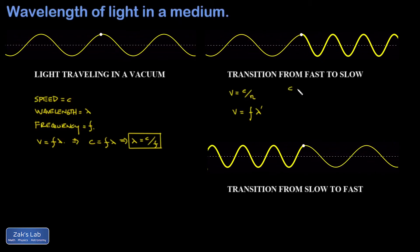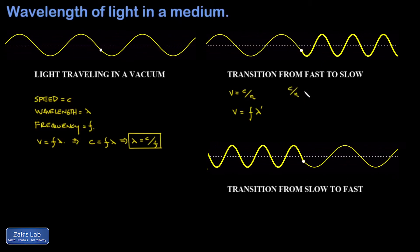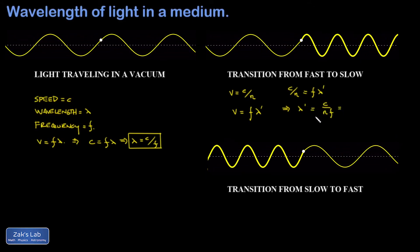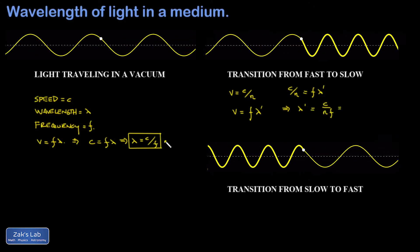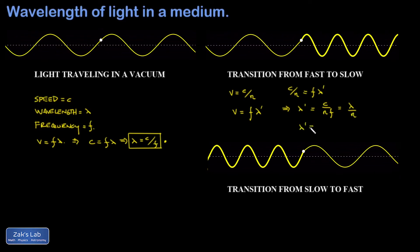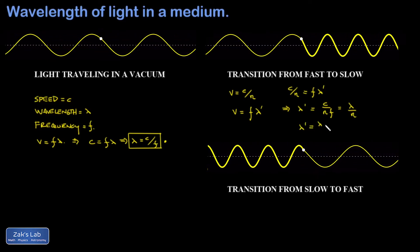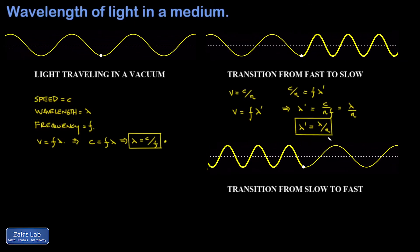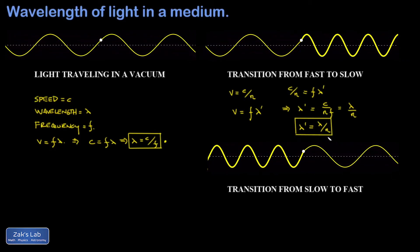So we can replace the new wave speed with C over N and solve for lambda prime. And then I realize that C over F, that was our original wavelength in a vacuum. So I arrive at this really useful formula: the wavelength of light in a medium is equal to the wavelength in a vacuum divided by the index of refraction.